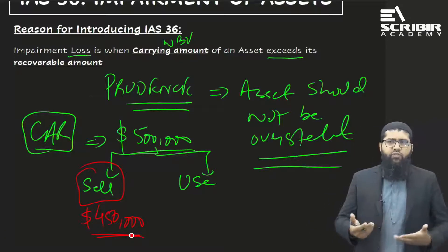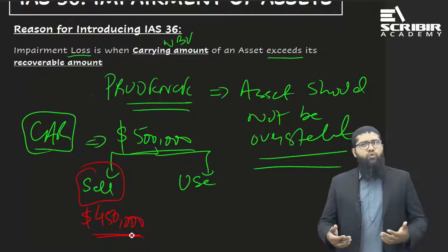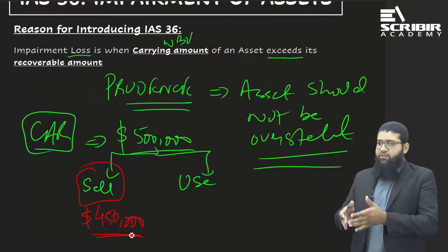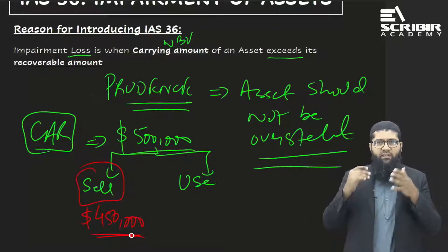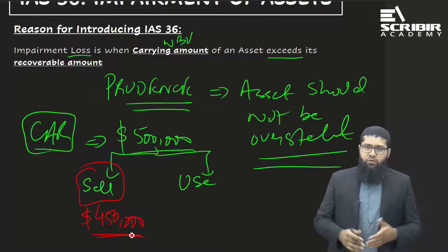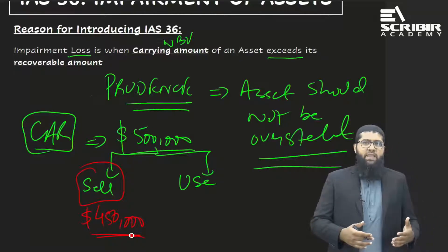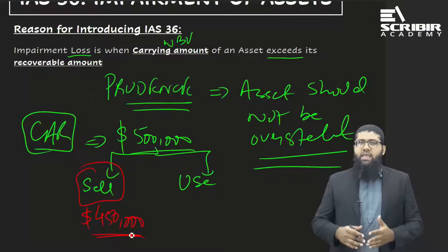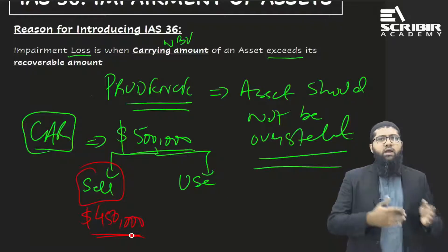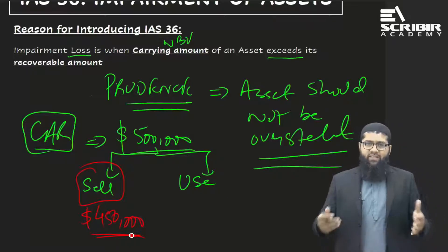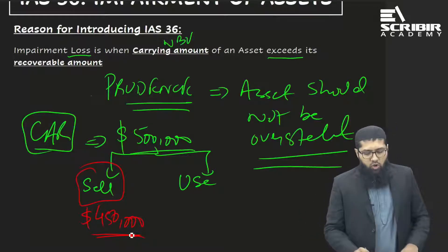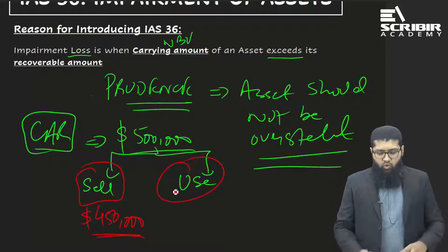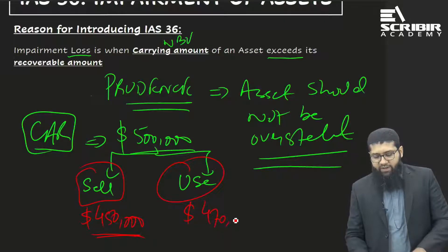If you continue to use this car, there would be benefits arising — you would save the cost of taxis, buses, and trains. You might also lease out the car and ultimately dispose of it after one, two, or three years. All in all, the maximum benefit that could be derived from the use of this car is four hundred and seventy thousand dollars.